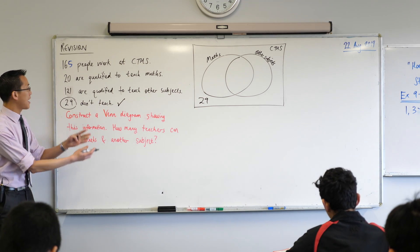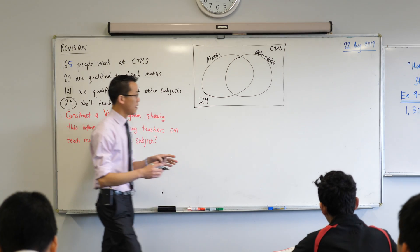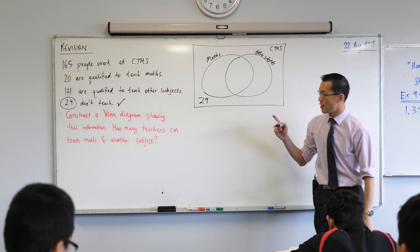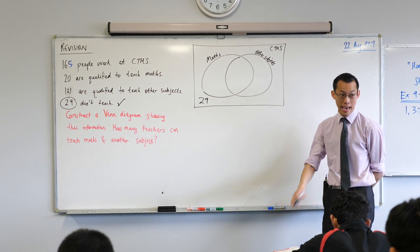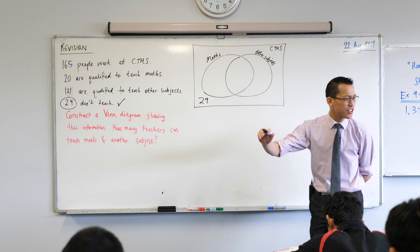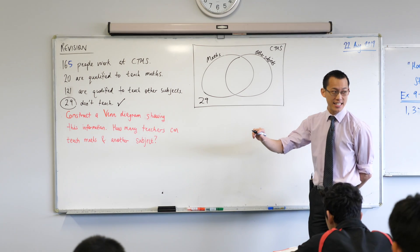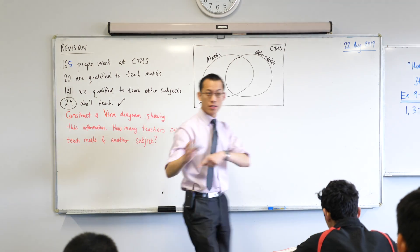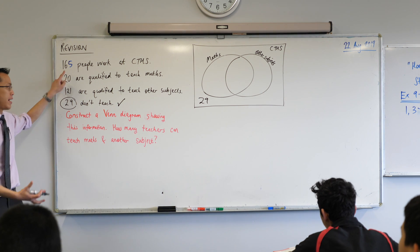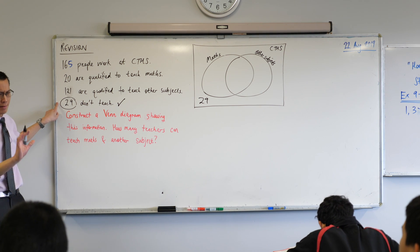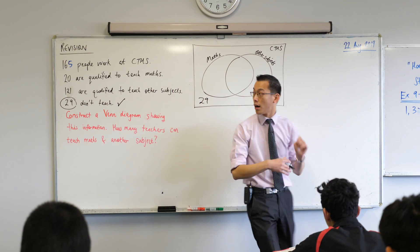Okay, now from there I have a look at some of the other information. Now you can do this a couple of different ways, but I'm going to say first how many people have I got left to put into the diagram? 136, because this is how many people I'll have in the end and I subtract 29.